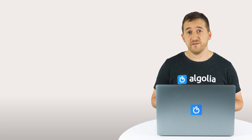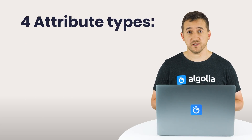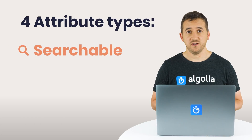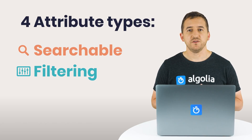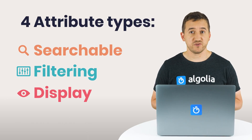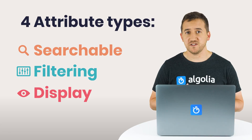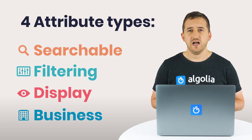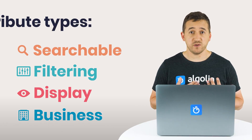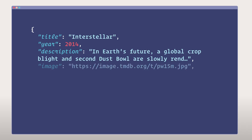We generally identify four categories: searchable attributes, filtering attributes, display attributes, and business metrics attributes. Let's see them in more detail one by one using this record as a reference.